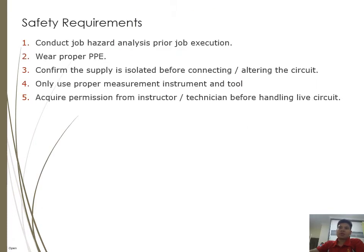These are the safety requirements that need to be adhered to when wiring the star delta circuit and energizing it to run the motor. Ensure you have a proper job hazard analysis, wear proper PPE, perform proper isolation of the circuit before starting work, be vigilant at all times, use proper insulated measurement tools, and get permission from the instructor or technician before handling the live circuit.